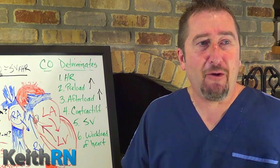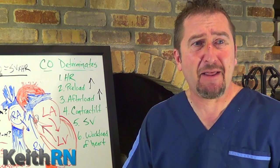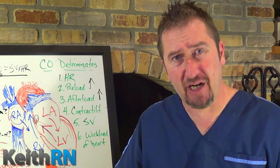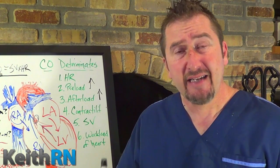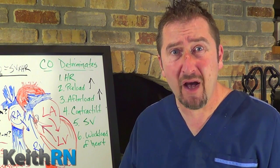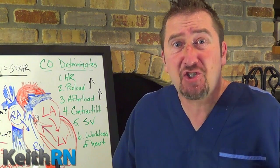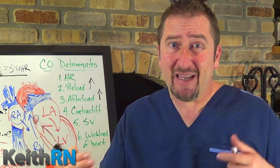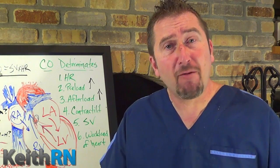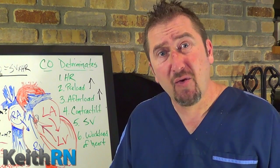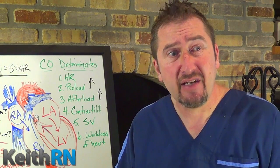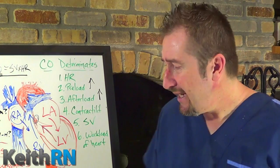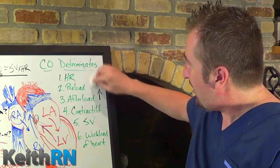We don't want increased preload and afterload, so we need to block that conversion. ACE inhibitors block the conversion of angiotensin one to angiotensin two. While angiotensin two is useful in shock to save your life, in heart failure it is counterproductive — the normal physiologic effect actually worsens a patient with end-stage heart failure. So let's look at how an ACE inhibitor affects the determinants of cardiac output.